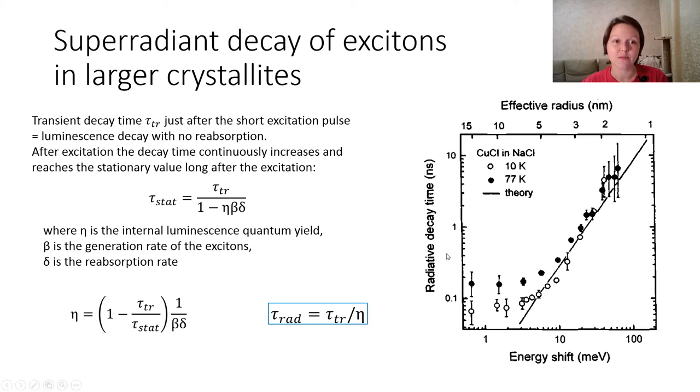To raise the decaying time just after the short excitation pulse is luminescence decay with no reabsorption. After excitation, the decay time continuously increases and reaches the stationary value long after the excitation. Here nu is the internal luminescence quantum yield, beta is the generation rate of the excitons, and delta is the reabsorption rate. From this equation we can obtain the internal luminescence quantum yield and thus the radiative decay time.